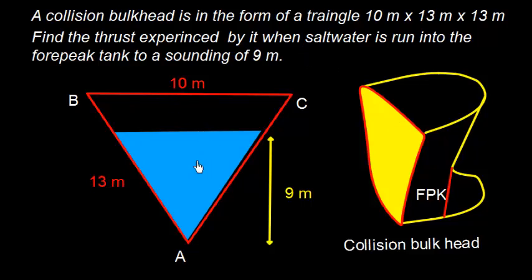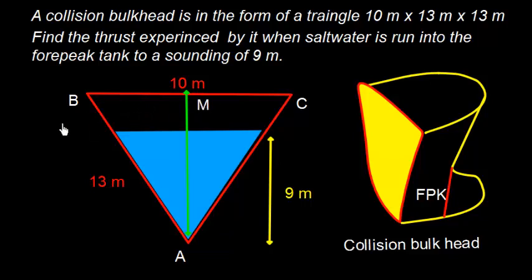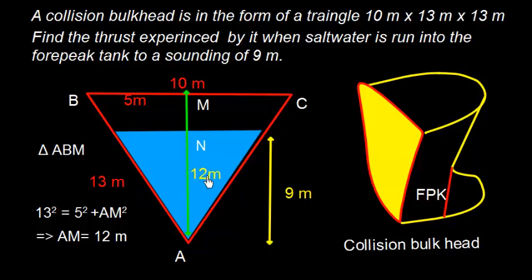We need to find the thrust acting on the collision bulkhead, on this collision bulkhead. To find the thrust let us find this height. What is going to be this height? Let me just name few things. I name it this M and this as N. So this BM is going to be 5. In triangle ABM, we will use the Pythagorean theorem. So, 13² = 5² + AM². This gives me AM is equal to 12 meter. So, AM is 12 meter.